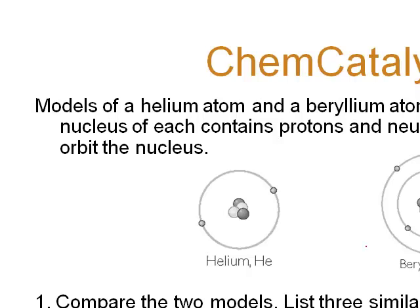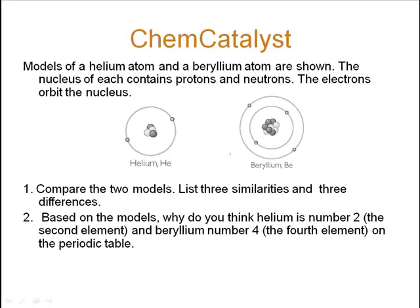Here are two models of helium and beryllium atoms. The nucleus of each contains protons and neutrons. The electrons orbit the nucleus. So look at these two models and answer the following two questions. This should take about one minute.